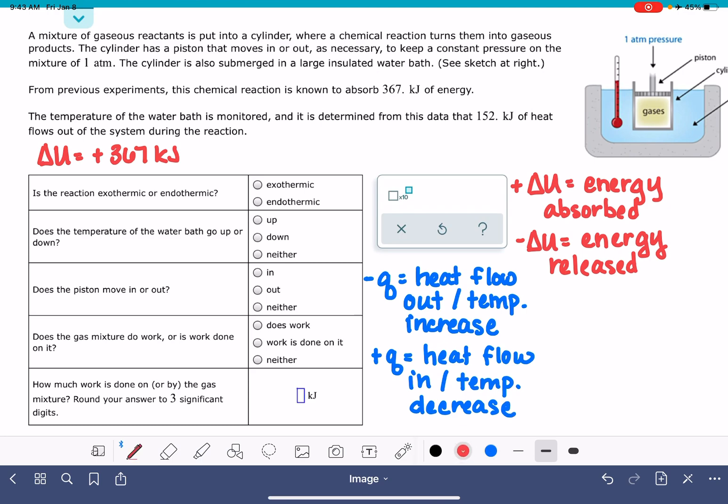So also, let's write up here our value of Q. Because we have heat flowing out of the system, heat flowing out means that our Q is negative, negative 157 kilojoules.